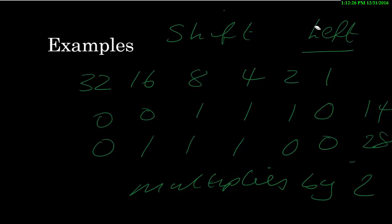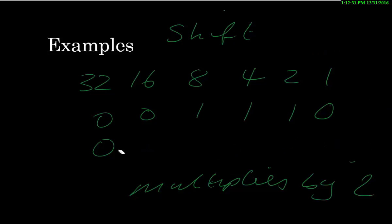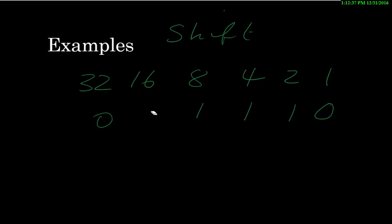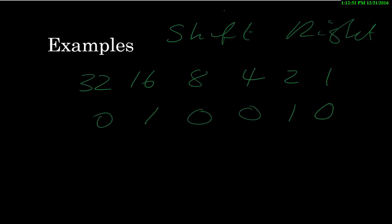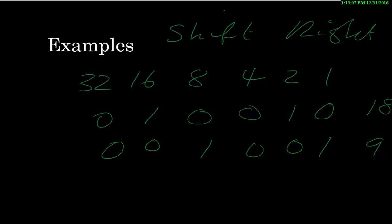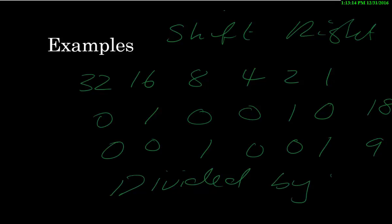What do you think a right shift does? Let's do a right shift with a different number. A right shift moves everything over in the opposite direction. The answer before was 18 — sixteen plus two — and now we have 9. Clearly, a right shift has divided the original number by two. So that's shift right and shift left as you can see.